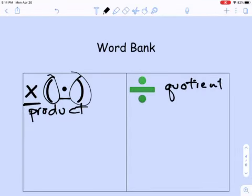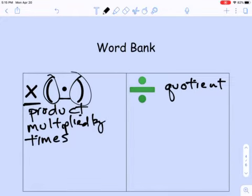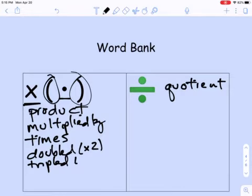For products, multiplied by is pretty obvious, or times. You're going to see times a lot. Some other ones that are not as obvious: if you see somebody say something is doubled, that means it's multiplied by two, or tripled, that would be multiplied by three.